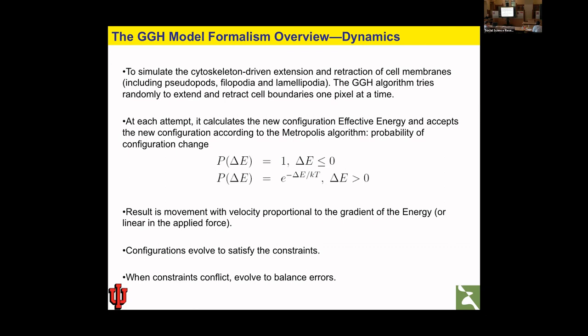If the change in energy is negative — driving toward a lower energy state — we accept it with probability one. If the change in energy is positive, we accept this change in lattice configuration with probability that decays exponentially with exponent delta-E over kT. The temperature parameter T can be thought of as the cell membrane fluctuation amplitude — higher T means a more jagged boundary.